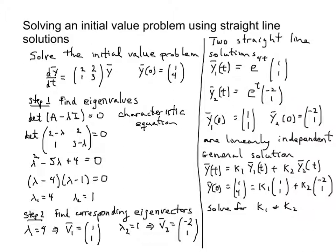These are called straight-line solutions because e to the 4t is just a scalar. For every value of t, I get some real number that multiplies the vector 1, 1, simply stretching it by some amount. When t is large it becomes very long; when t is 0 it is 1; and as t goes to minus infinity, this number goes to 0 and the solution approaches the origin. This straight-line solution is a parametric description of a set of points on a ray that starts at the origin, goes through the point minus 2, 1, and continues out in that direction.